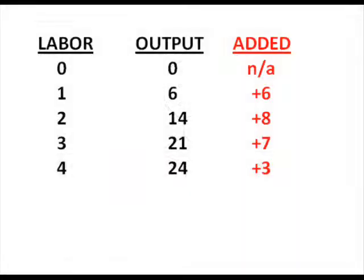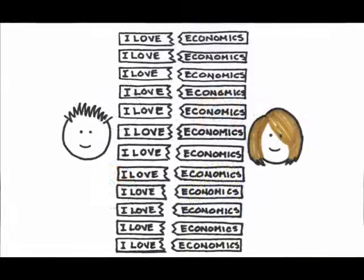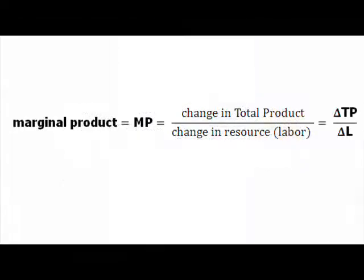At first, each worker adds more to the output than the previous worker. How is this possible if each worker has the same skills? Here's the way it typically works: at first Lee is working alone, but when I add Angelina, they form a team and split the job into specialized tasks. Most often one person takes over the 'I love' part and the second person does the 'economics' part. This specialization, or division of labor, leads to increasing marginal product. By definition, marginal product — or MP for short — is the addition to the total product when another unit of resource, in this case labor, is added.